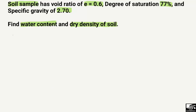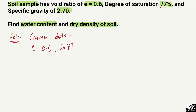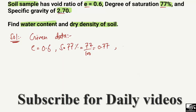We write down the given data and required data. The given data: void ratio E = 0.6; degree of saturation S = 77%, which divided by 100 gives 0.77 in decimal; and specific gravity of the soil sample Gs = 2.70.